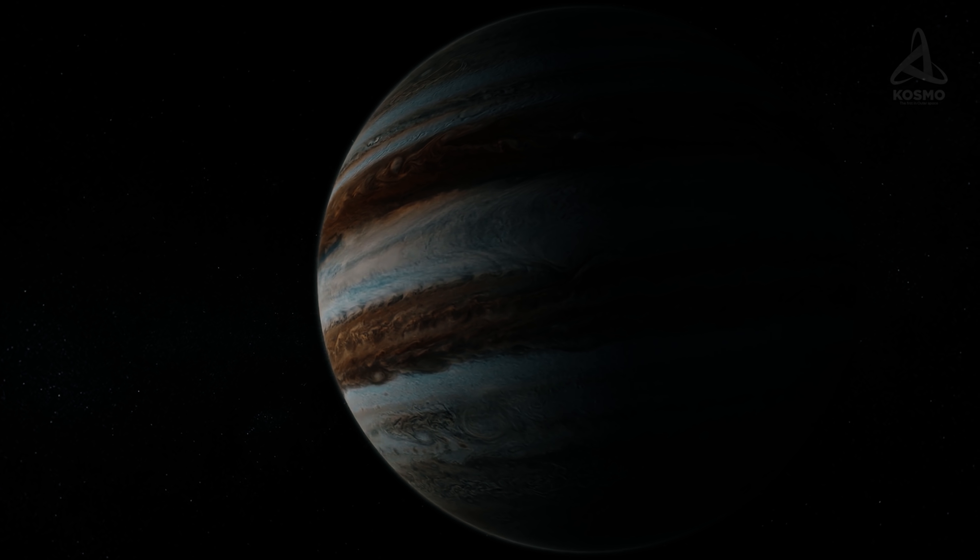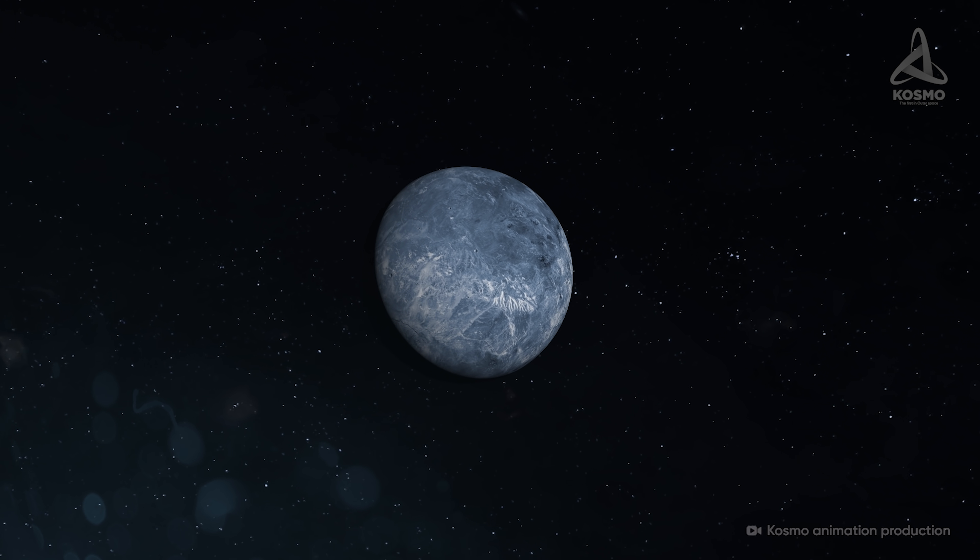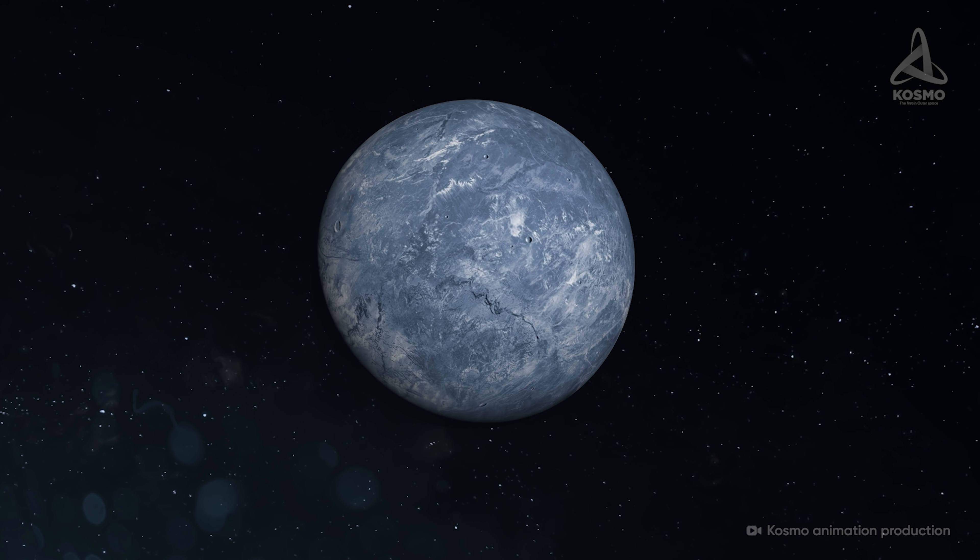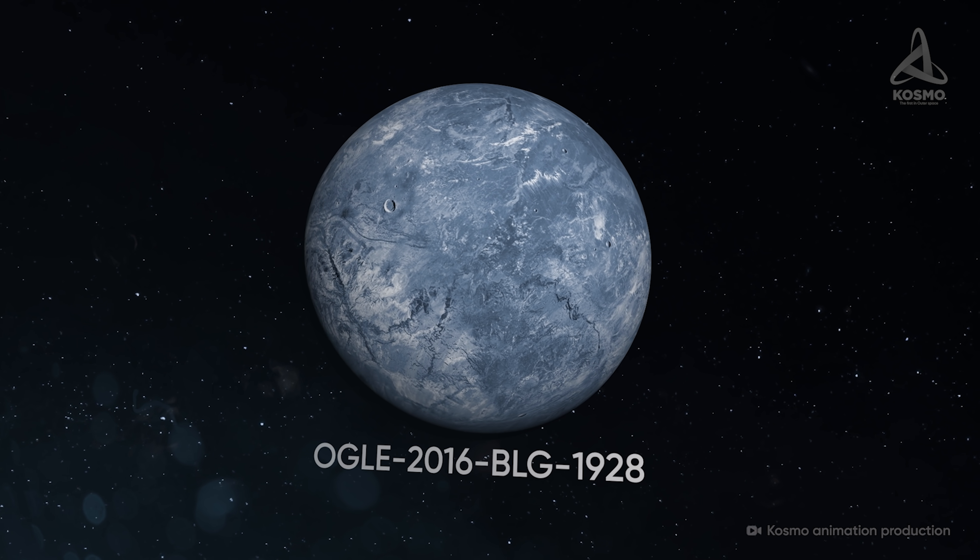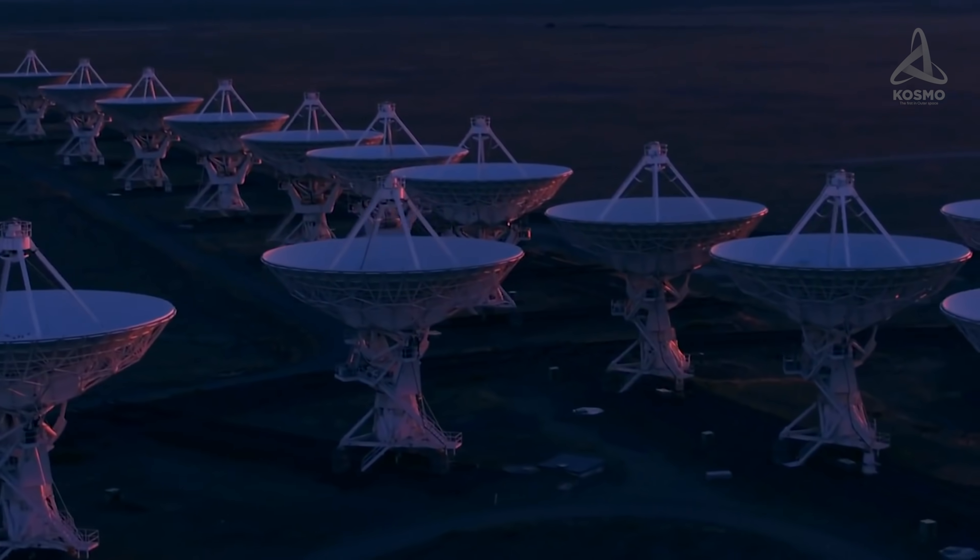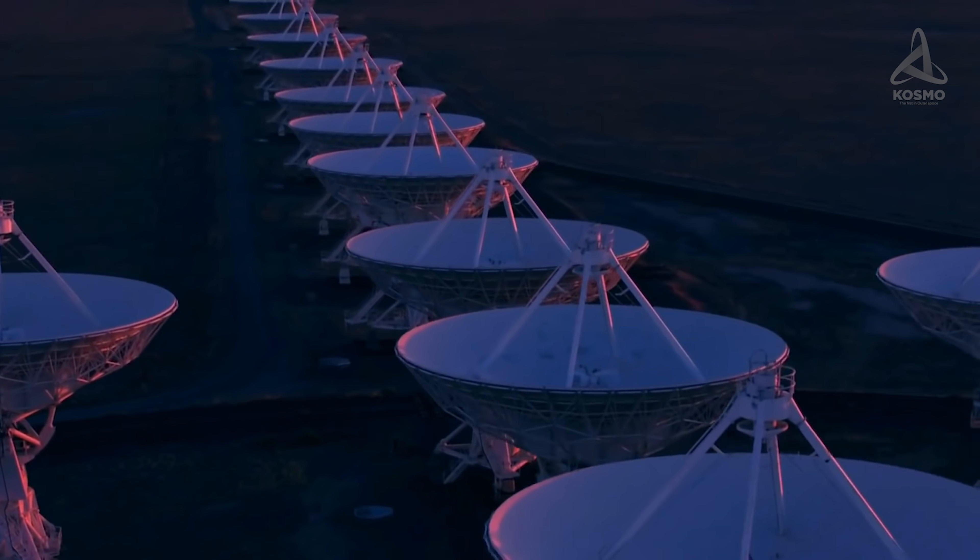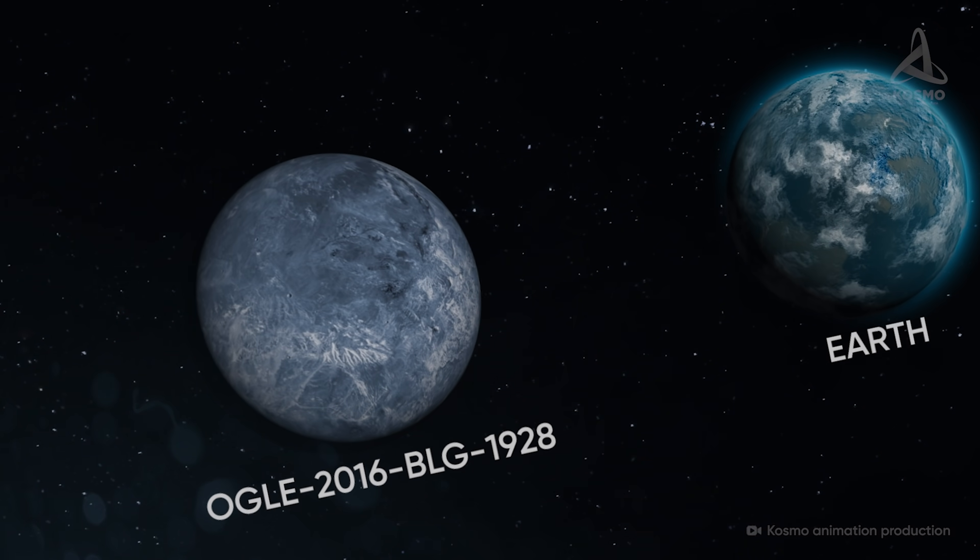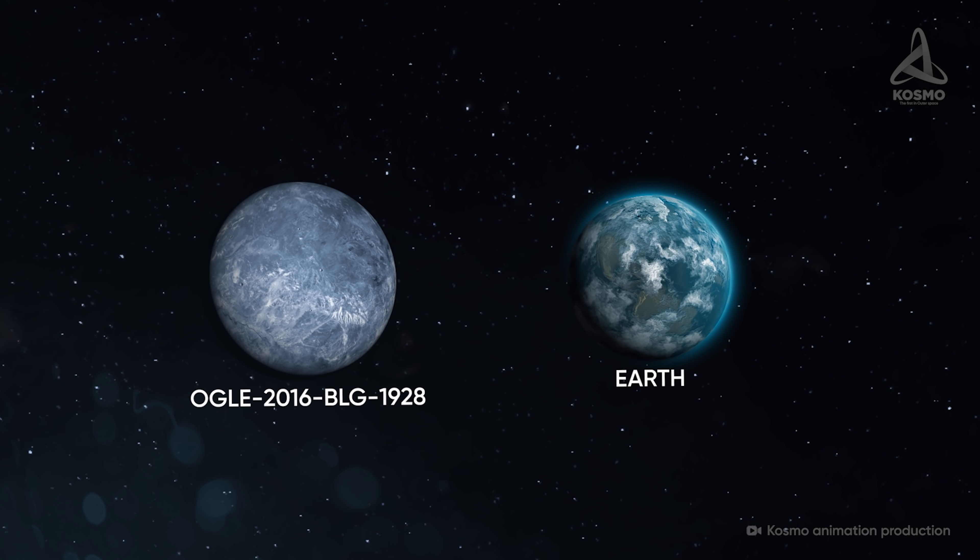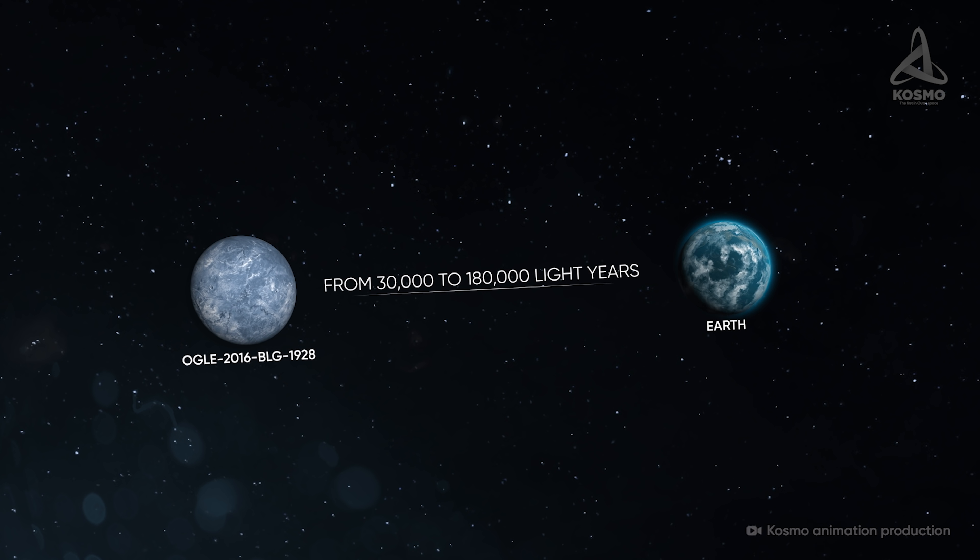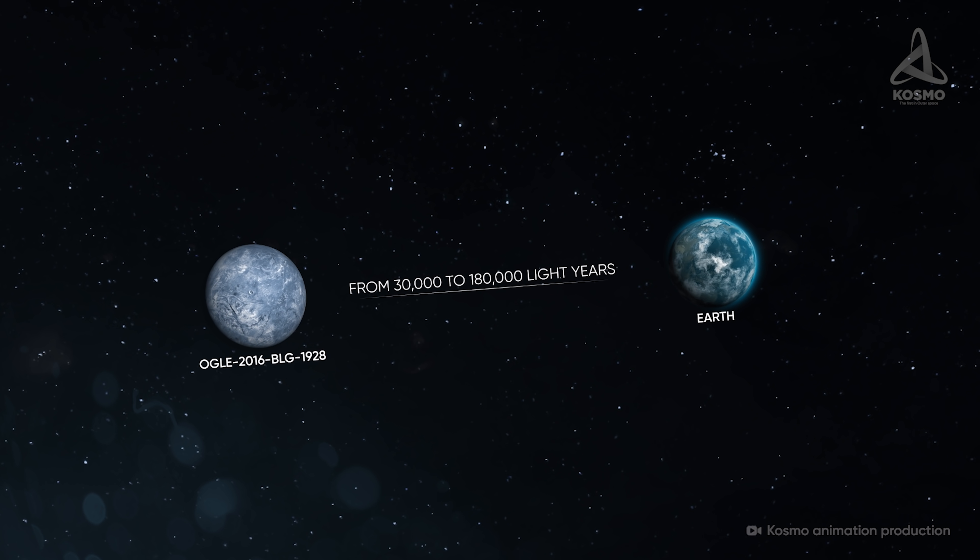Incidentally, a planet doesn't have to be a massive gas giant to avoid freezing in the cosmos. In 2020, a rogue planet candidate was detected using gravitational microlensing techniques. It is still awaiting confirmation of the rogue planet's status and its parameters have been defined only generally so far. According to preliminary data, however, the object is comparable to the Earth in terms of its mass and is anything from 30 to 180,000 light-years away.